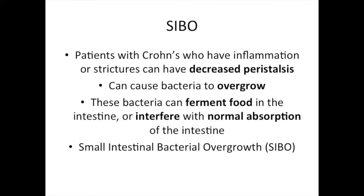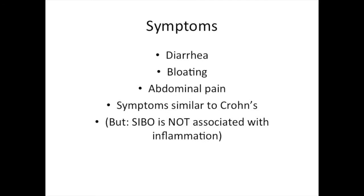The extra bacteria then ferment food in the intestine or interfere with the normal absorption of the intestine. This condition is called small intestinal bacterial overgrowth, or SIBO for short. SIBO usually manifests as diarrhea, bloating, and abdominal pain.